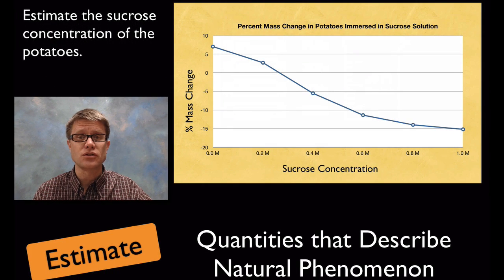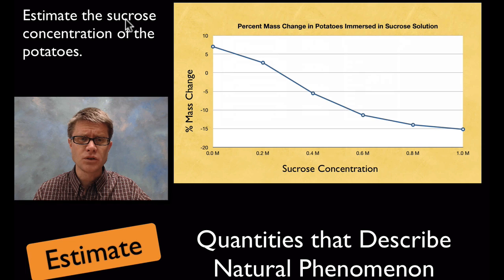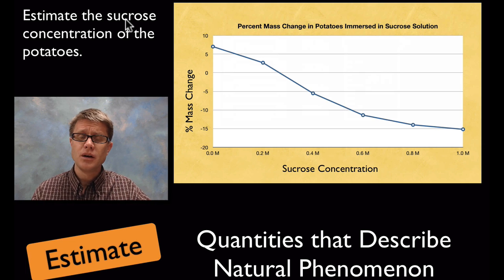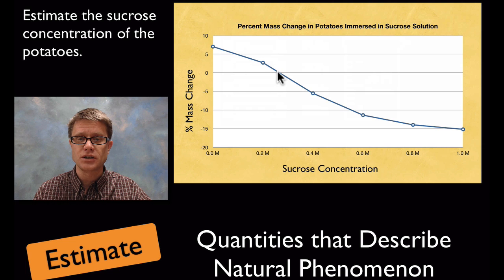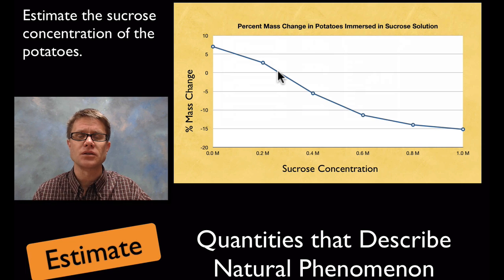Let's try another estimation. This is the actual osmosis lab that a lot of people do. We took potato cores, put them in different concentrations of sucrose solution and measured their percent mass change. Sometimes those potatoes got bigger, sometimes they got smaller. They're asking us to estimate the concentration of the potatoes. If you put a potato that has the same concentration as the surroundings, there's going to be isotonic, there's not going to be any change. I could look at a 0% change in mass and that's going to be around 0.28 molar sucrose. That's going to be my guess for the concentration of potatoes, at least in our lab.